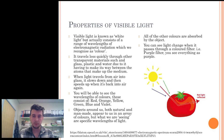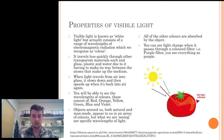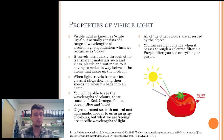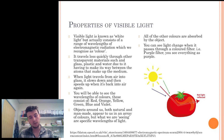Objects around us, both natural and man-made, appear to us in an array of colours, but what we are seeing are specific wavelengths of light. For example, we see a tomato as red because it is transmitting red light towards us — all of the other colours are absorbed by the object. The light energy can be absorbed in the form of heat. You see light change when it passes through a coloured filter, such as a purple filter — you can see everything as purple.